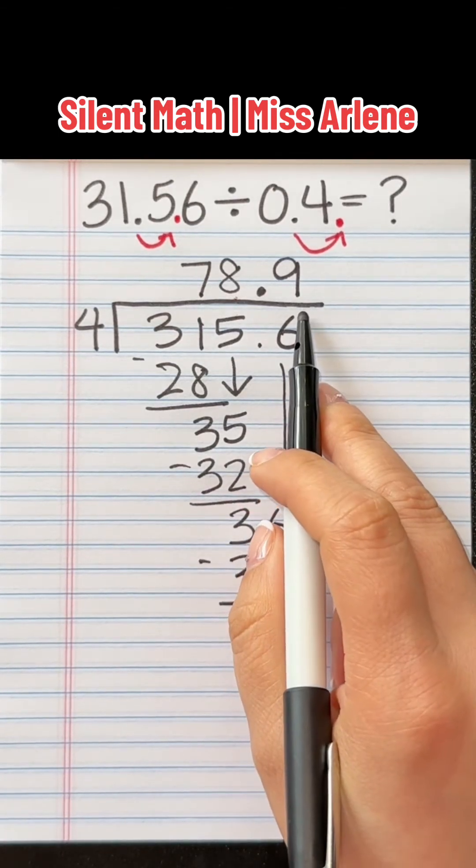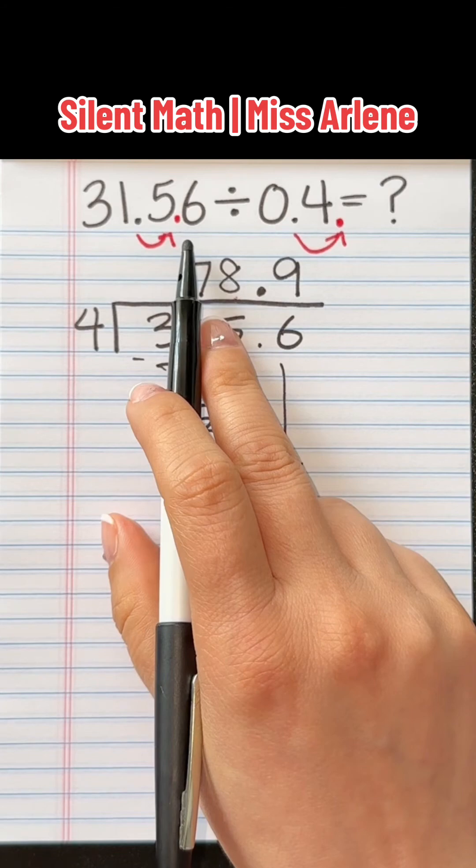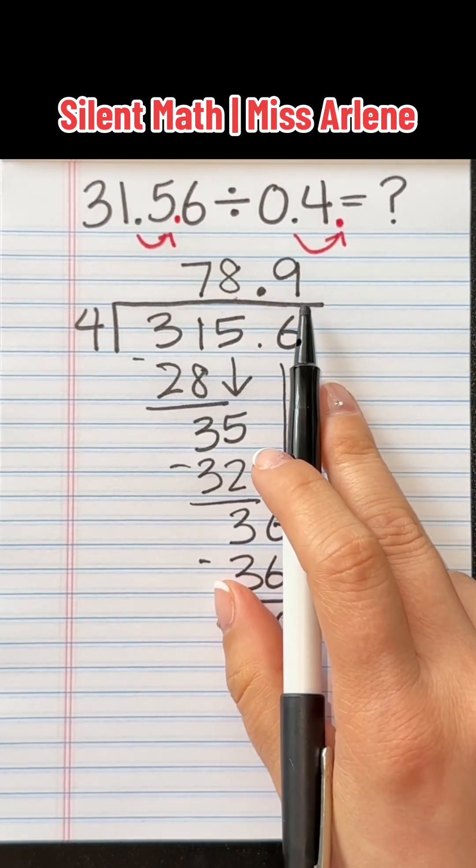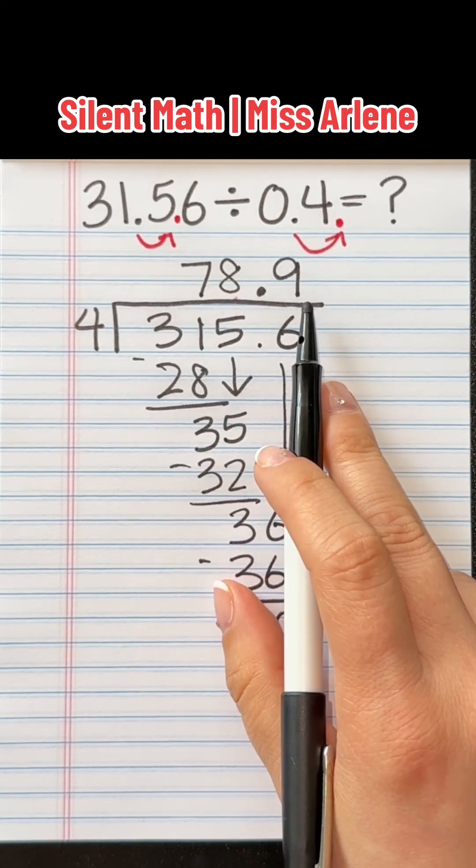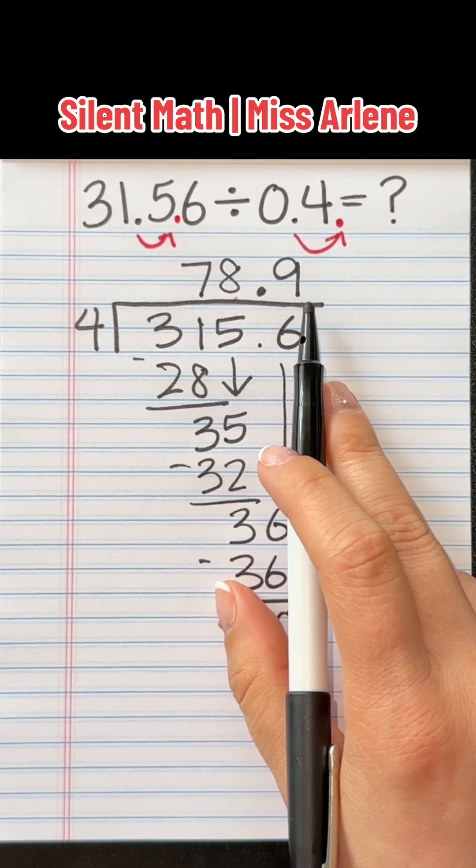And so to the original problem, 31.56 divided by 0.4 is equal to 78.9. Let me know if you like this tutorial and if you want to see more. Bye!